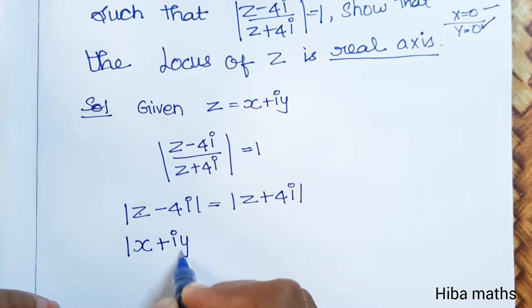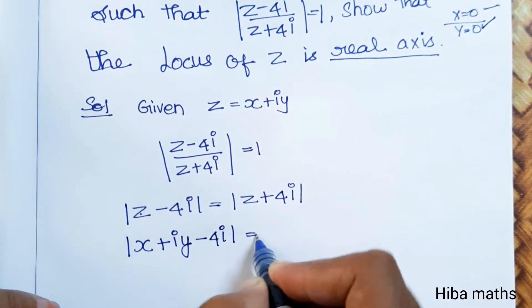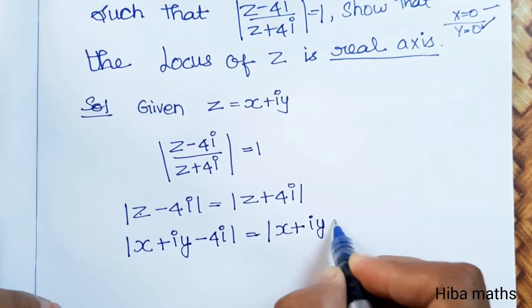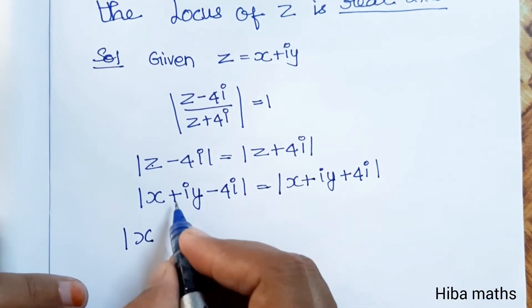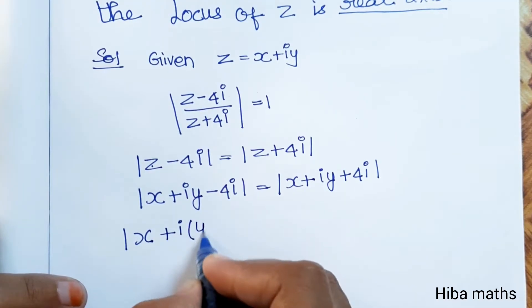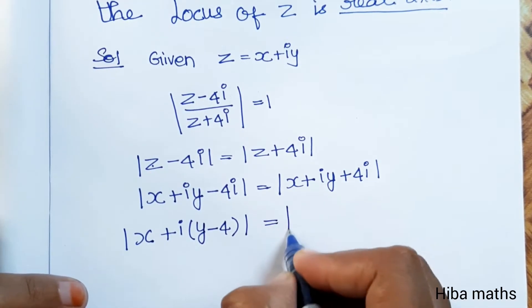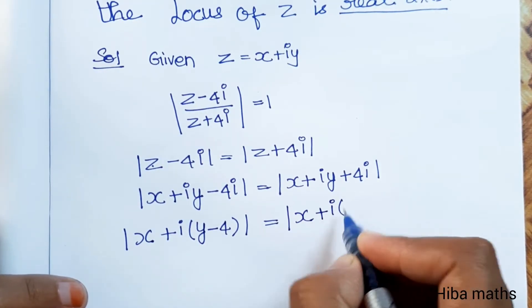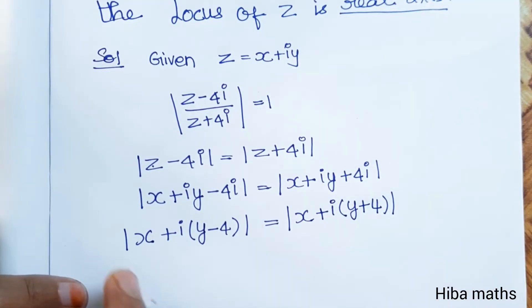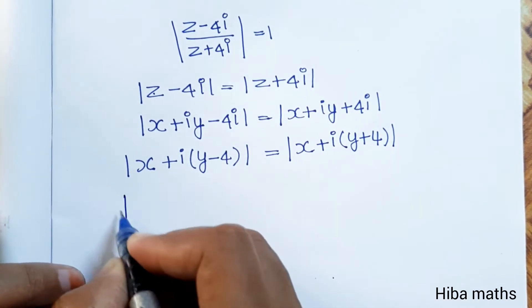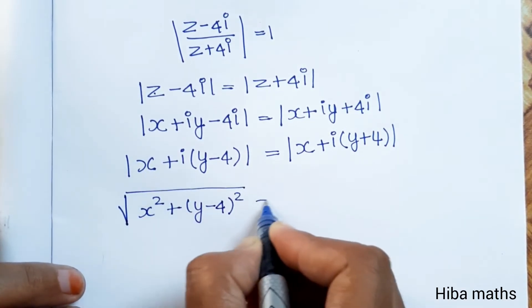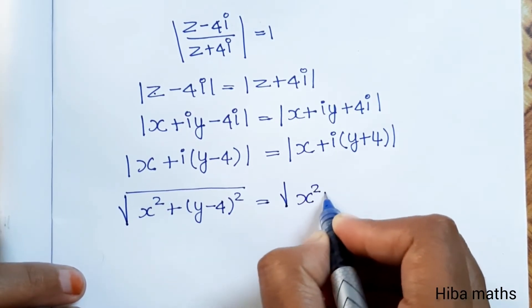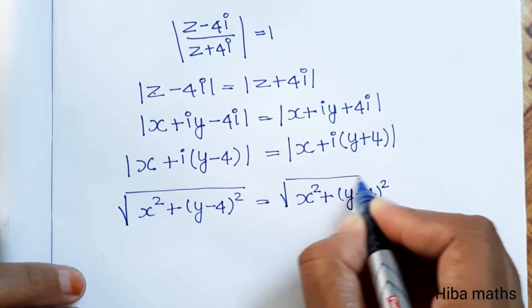X plus iY minus 4i. For the imaginary term, it's y minus 4. That equals x plus i times y plus 4. Taking modulus, the imaginary term is y minus 4. Square root of x squared plus y minus 4 squared equals square root of x squared plus y plus 4 whole squared.